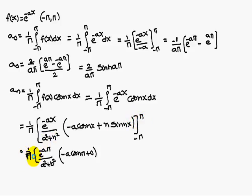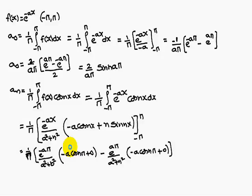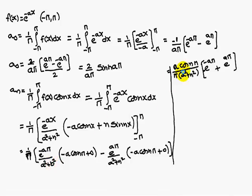Substituting the limits: 1 by pi into e power minus a pi by a square plus n square, into minus a cos n pi, from the upper limit. Substituting the lower limit, e power minus a into minus pi, that is e power plus a pi by a square plus n square, into minus a cos n pi. Note that cos of minus theta equals cos theta, so cos n minus pi equals cos n pi.